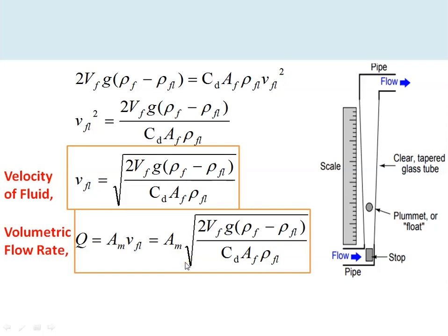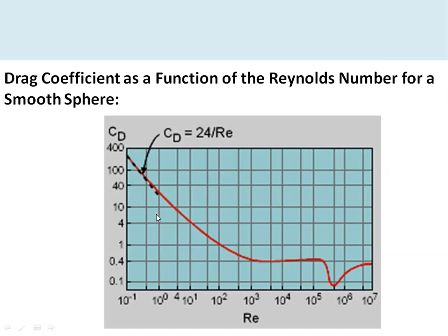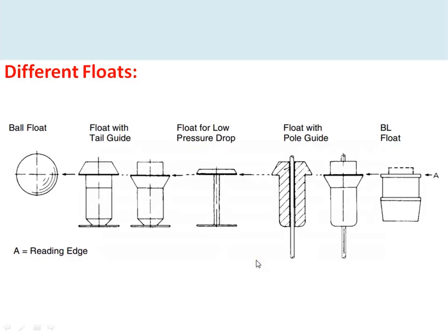The drag coefficient C_D for a smooth sphere (the ball float) varies with Reynolds number. For laminar flows, C_D is not constant and changes with Reynolds number, so rotameters are generally not preferred for laminar flow. Above a certain Reynolds number, C_D becomes approximately constant. Rotameters are generally used for flow rates with Reynolds number greater than 1000, where C_D is essentially constant. Different float types include ball floats, tail-guide floats, low-pressure-drop floats for applications where high pressure drop is unacceptable, and floats with guides used in metal tube rotameters.